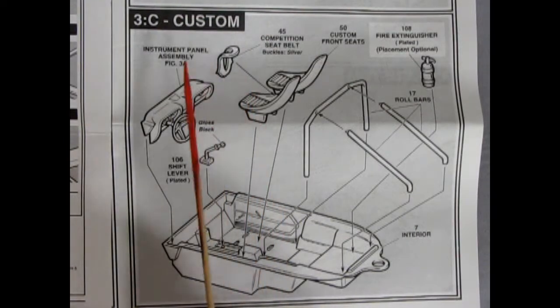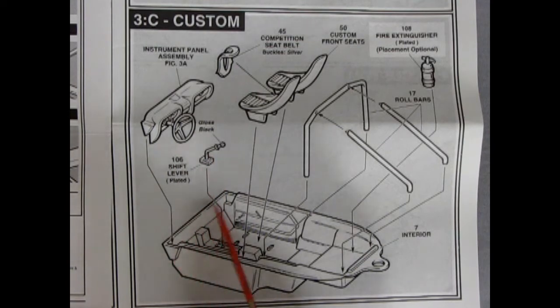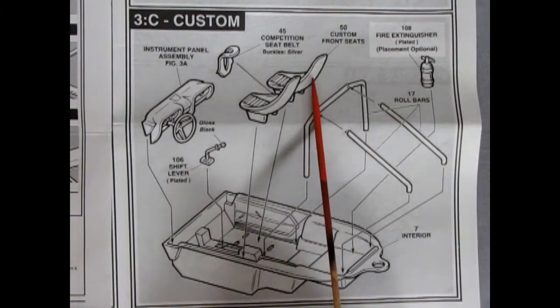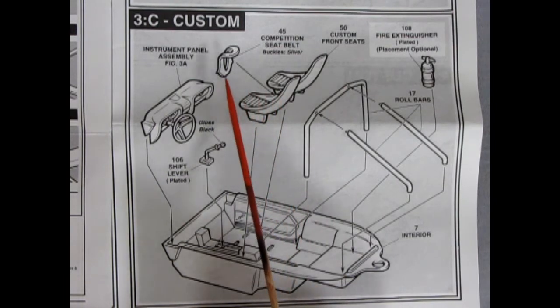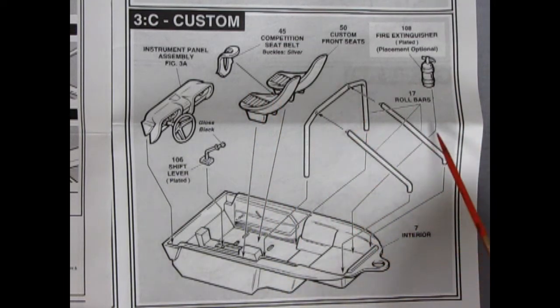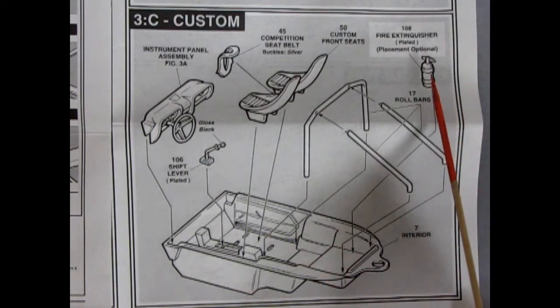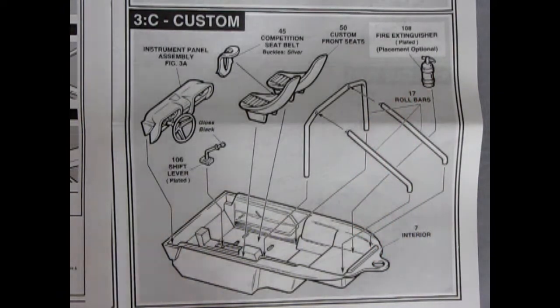Section 3C shows our custom interior. So there's our dashboard again dropping in with the gear shift lever going in the center console. And here we have competition seats with a four-point seat belt harness. As well as the roll cage going in and no seat in the back. You glue on a fire extinguisher in here just for safety. Location optional.